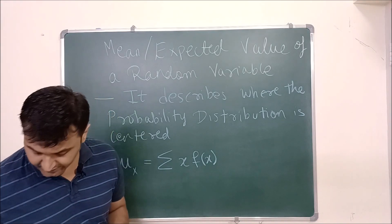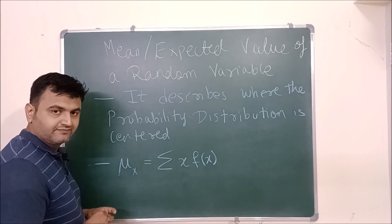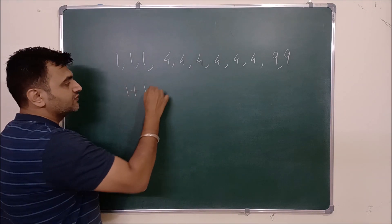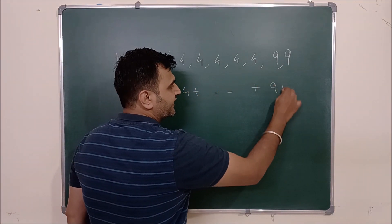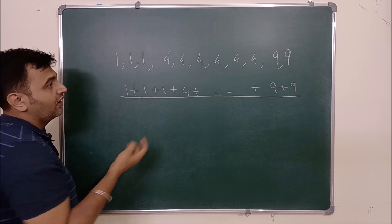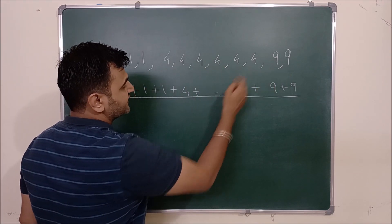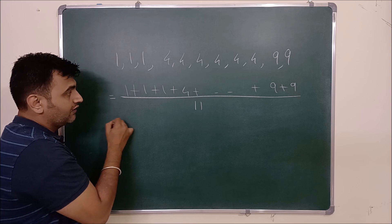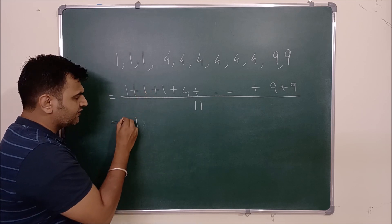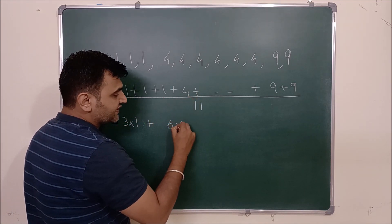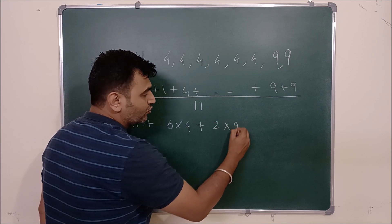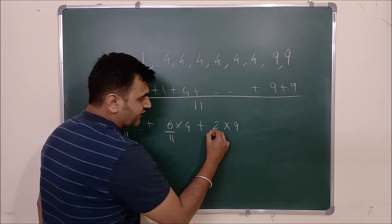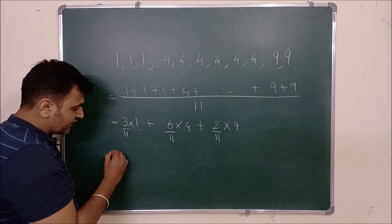Let's try to arrive at this definition. Suppose you have the set of points: 1, 1, 1, 4, 4, 4, 4, 4, 4, 9, 9. To find the mean, as studied in high school, you do 1+1+1+4+4+4+4+4+4+9+9 divided by the total number of observations, which is 11. We can rewrite this as: 3 times 1, plus 6 times 4, plus 2 times 9, all divided by 11.